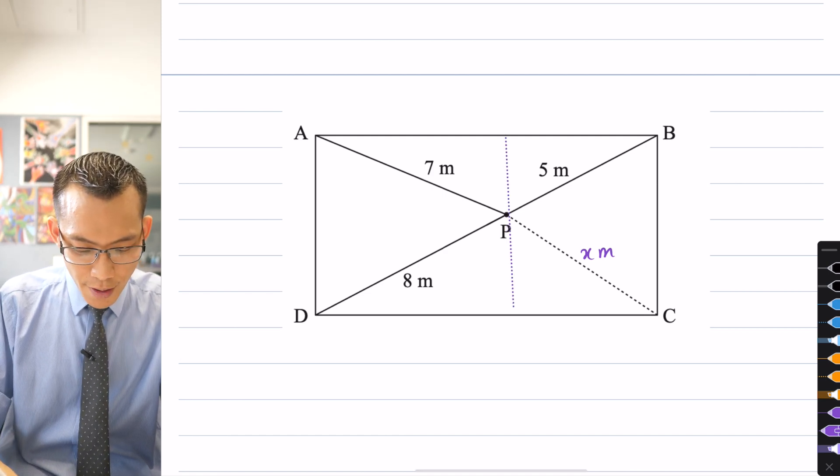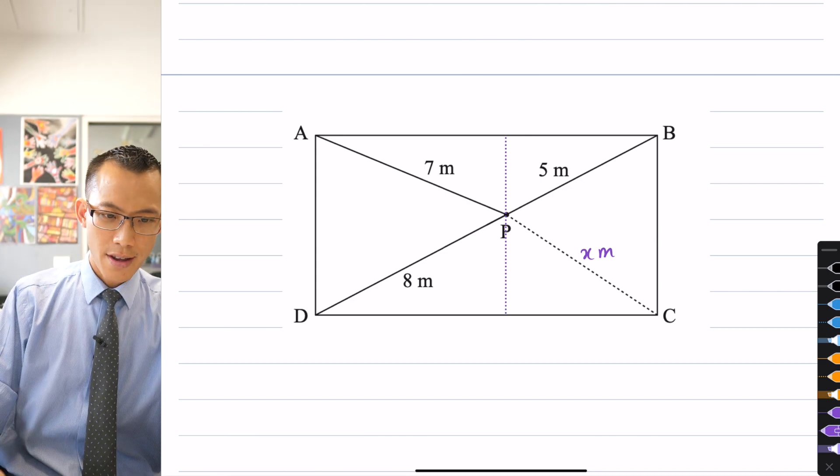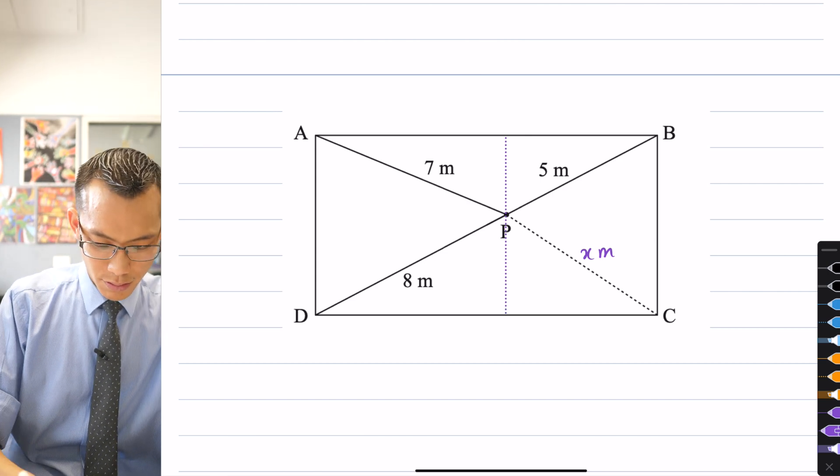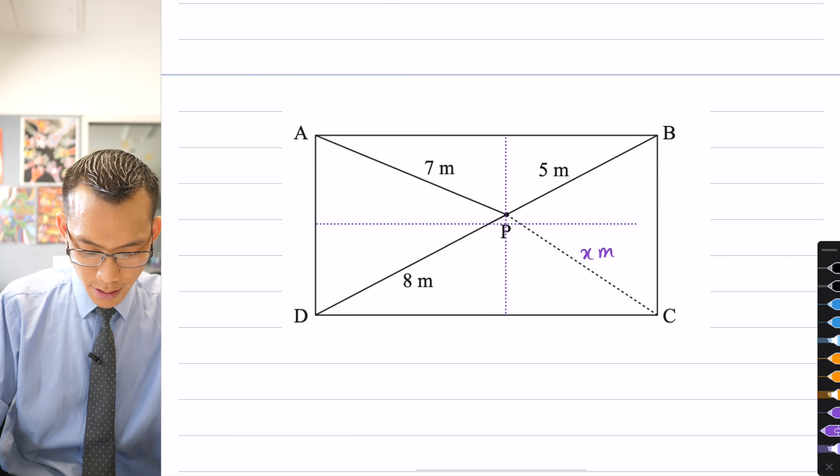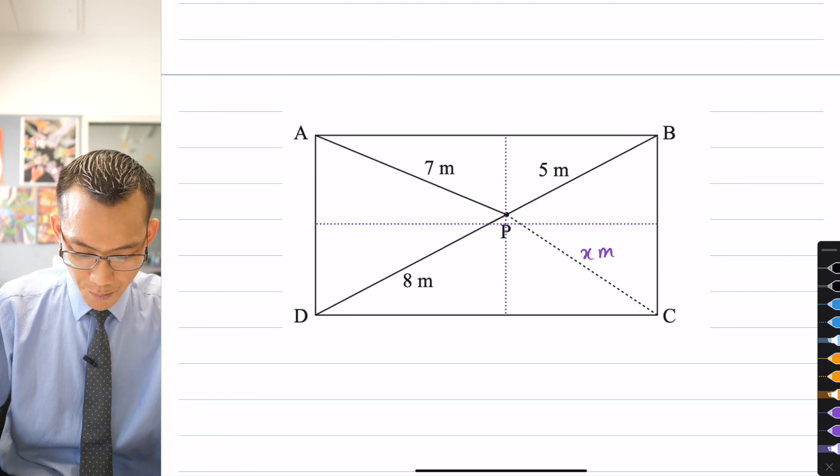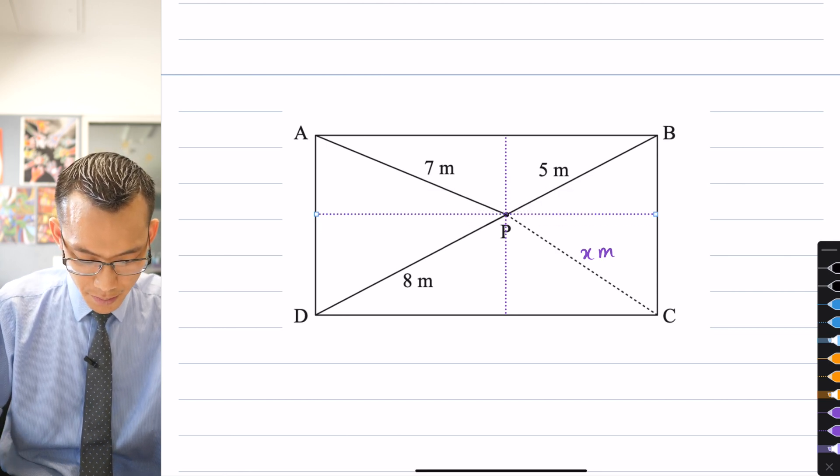So maybe for starters, I'll call that unknown length X, and then I'll also notice that if I draw a bunch of lines that are perpendicular and parallel to the sides that go through P. So for example, if I draw a length like so, and then I'm also going to draw one across.